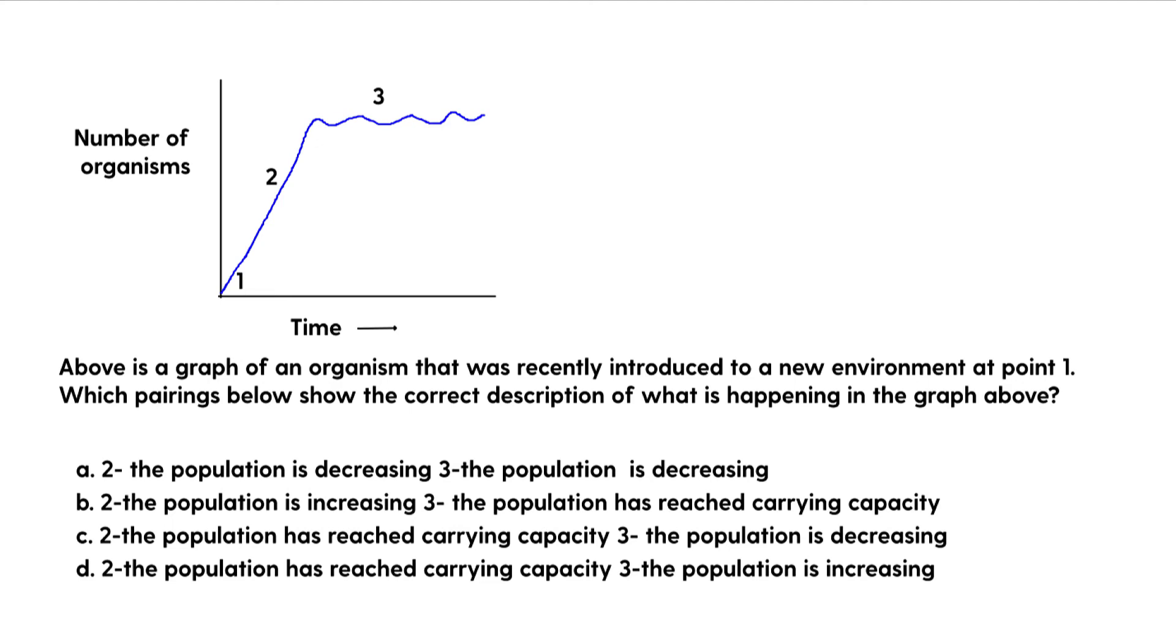Above is a graph of an organism that was recently introduced to a new environment at point one. Which pairings show the correct description of what is happening in the graph above?